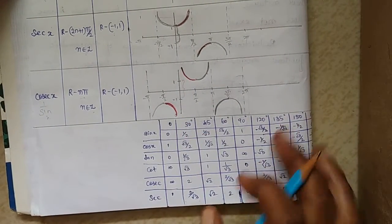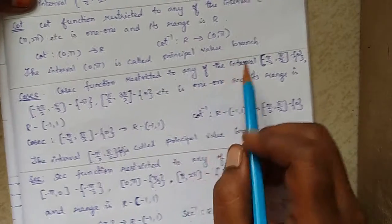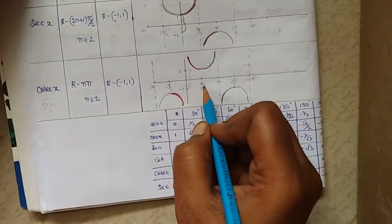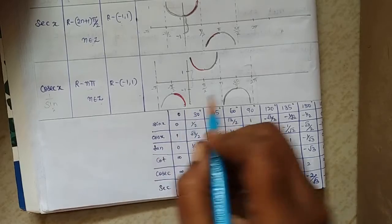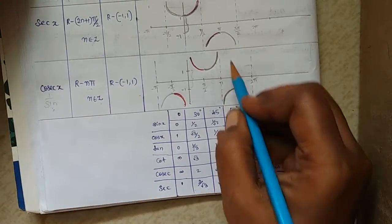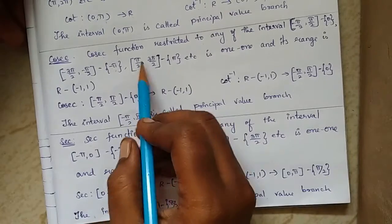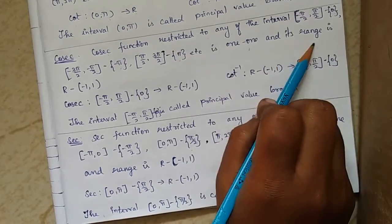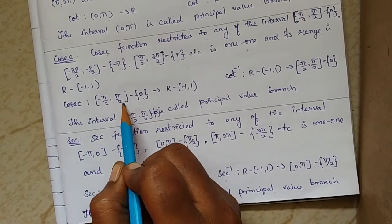The cosecant function restricted to the interval [-π/2, π/2] minus {0}: here we take from -π/2 to π/2, but at 0 the function does not exist so we remove 0. Similarly, for the interval [-3π/2, -π/2] we remove -π, and for [π/2, 3π/2] we remove π. With these removals, the function is one-one and the range is R minus (-1, 1).